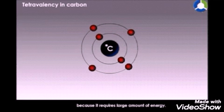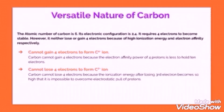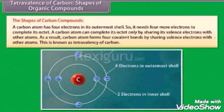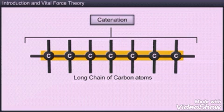This property is called tetravalency. Carbon cannot gain 4 electrons to form an anion because 4 protons cannot hold 10 electrons present in the shells and also carbon cannot lose 4 electrons and become a cation because it requires large amount of energy to remove the electrons and with 2 electrons the atom will be unstable. So carbon shares 4 electrons to form a stable octet configuration. Because of this sharing, carbon is said to be tetravalent in nature.